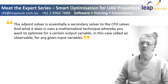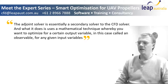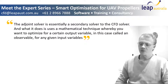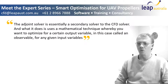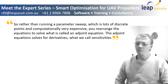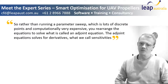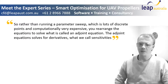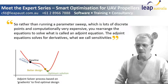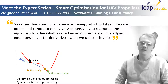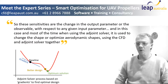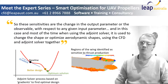The adjoint solver is essentially a secondary solver to the CFD solver. It uses a mathematical technique whereby you optimize for a certain output variable — called an observable — for any given input variables. Rather than running a parameter sweep, which involves lots of discrete points and is computationally very expensive, you rearrange the equations to solve what's called an adjoint equation. The adjoint equation solves for derivatives — what we call sensitivities — which represent the change in the output parameter or observable with respect to any given input parameter.